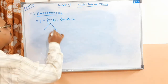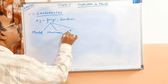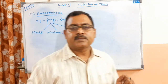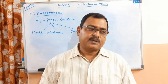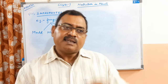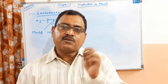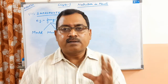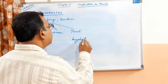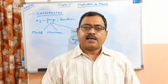Fungi are of three types: mold, mushroom, and yeast. Whenever an organism dies, fungi settle on it. They have very fine hair-like structures which grow on the surface of the dead organism, called hyphae. These hyphae form a dense network called mycelium.